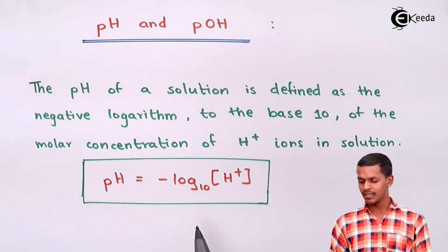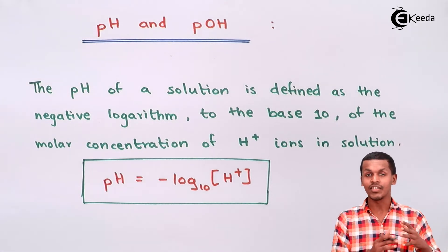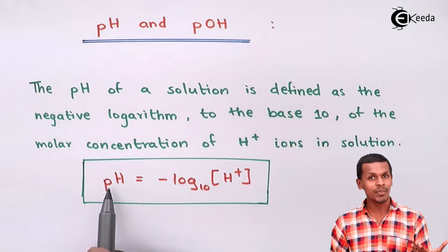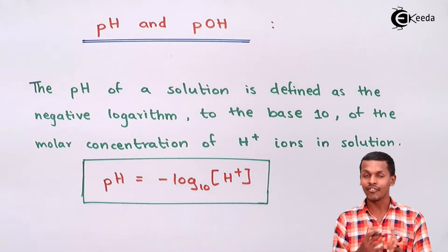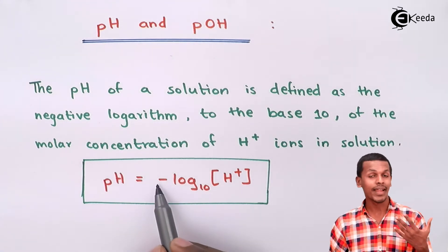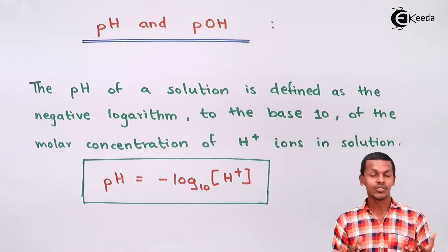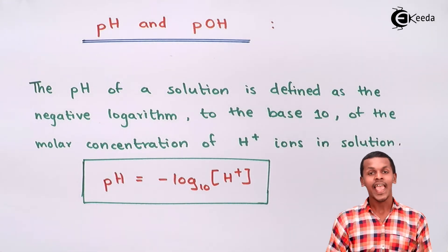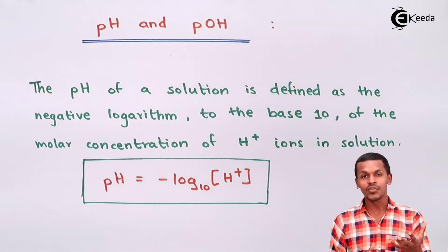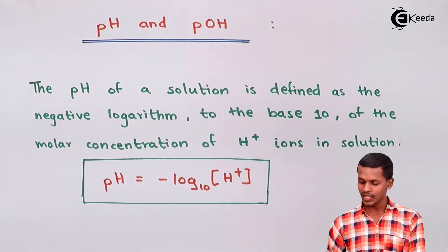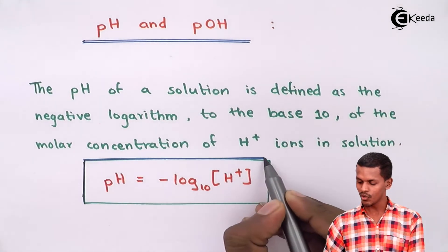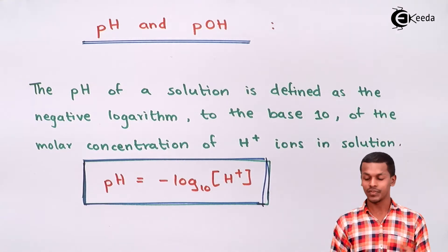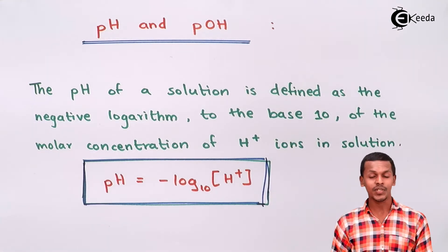As we can see, if the concentration of H+ ions is more in the solution, then obviously the pH value will be less. The reason is that pH is defined as the negative logarithm of [H+]. So, more H+ ions means a much lower pH value, which clarifies that the particular solution will be more acidic in nature.